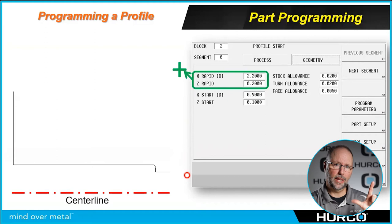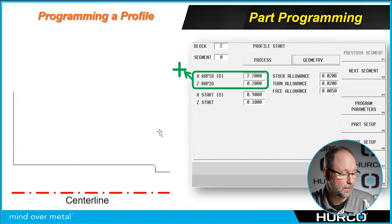We'll also talk about this later, but whenever we start a profile, we have to have perpendicular moves. In this case, I'm going to start with a turn, which means I have to end with a face. If I was facing this part off, I would start up here and come down with a face, and now I would have a turn to move to the other side. We have to have those perpendicular moves.